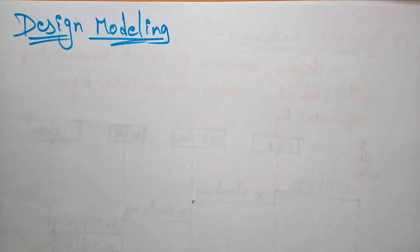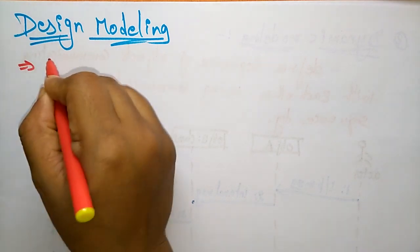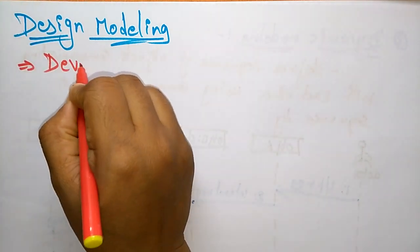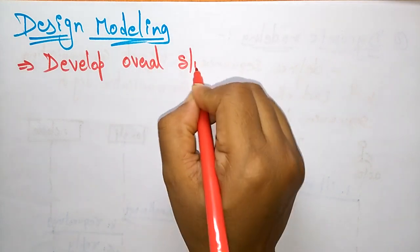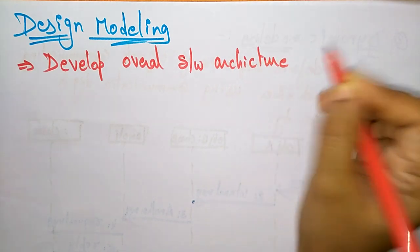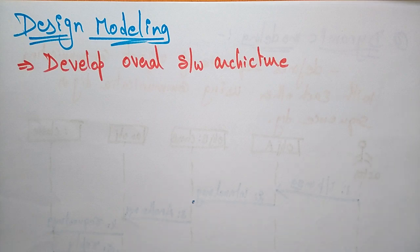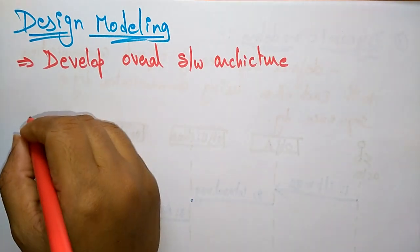In the previous videos we discussed requirement modeling and analysis modeling. The next stage is design modeling. The design model develops the overall system architecture, giving a complete idea about the software. Here you are going to design the complete structure of the software which you are going to develop. The structural systems will be divided into subsystems.